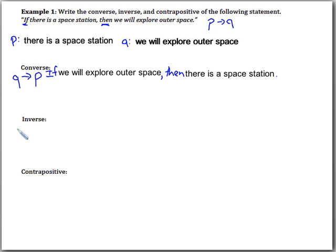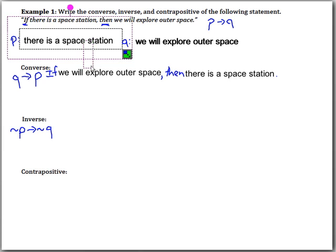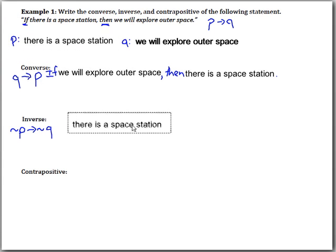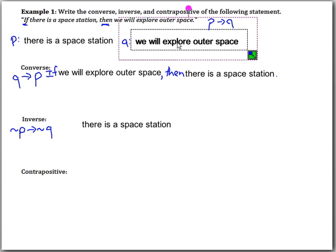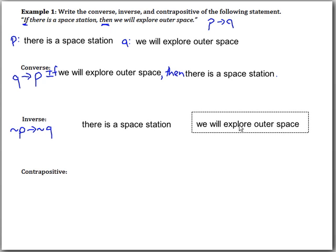For the inverse, all we want to do is negate the P and the Q, so we have negation P arrow negation Q. I'm not switching the P and the Q — the space station part stays first and exploring outer space stays second.